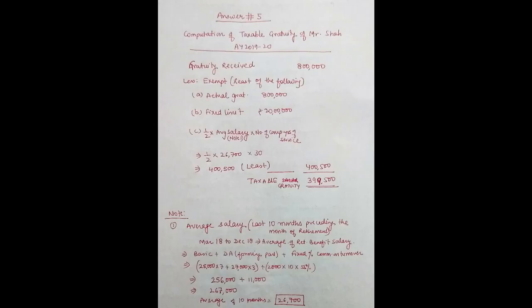To aap iska average nikaliye — 1 upon 2 into average salary into only completed years of service. Inhone kaam ki hai 30 years 7 months, 7 months ko ignore karna hai. Jho loog Payment of Gratuity Act mein covered nahi hote, unke liye completed hi liya jaata hai, to sirf 30 years hi lenge. Agar yeh Payment of Gratuity Act mein covered hote, to unke liye hum round off kar dete 6 months ke baad. Aap is question ko jaldi se solve kijiye, easy question hai aur presentation dekh lijiye video ke baad. We will meet in next video, thank you so much.